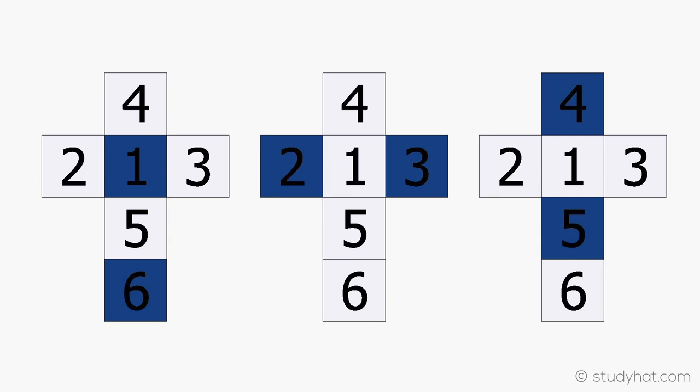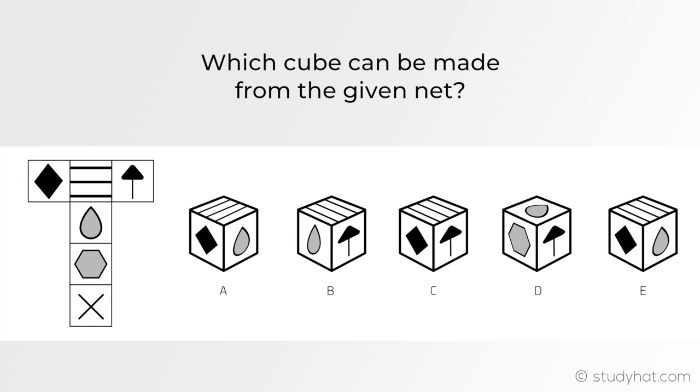A good way to eliminate any wrong answers is to check to see if any answers have two opposite sides together, as you'll know that is incorrect. Look at C. Both sides 2 and 3 are together, which is incorrect, so we can cross that one off. There aren't any other cubes where the opposite ends are placed incorrectly, so let's start with A.